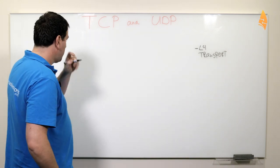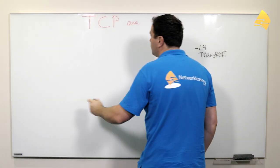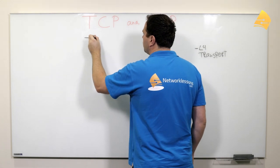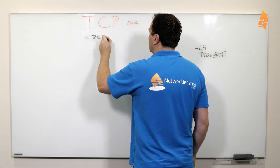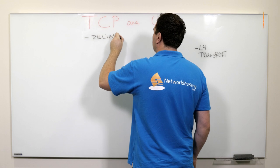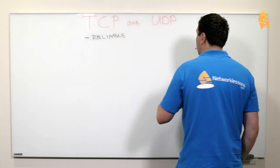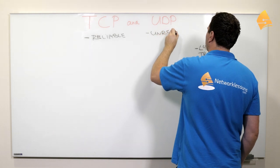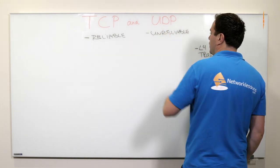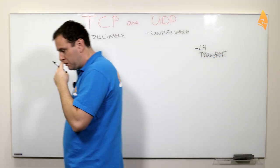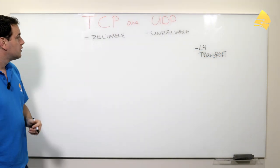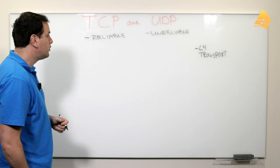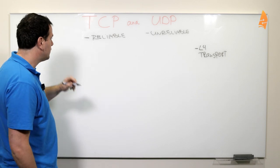Now what are some of the differences? First of all, TCP is what we call reliable, while UDP is unreliable. And I'll explain in a minute why it's unreliable and this one is reliable.